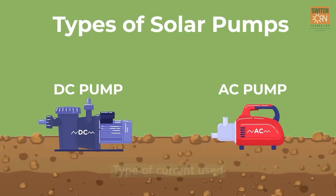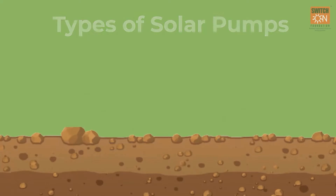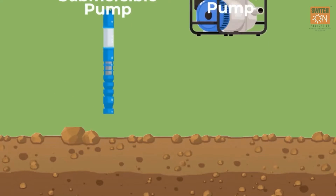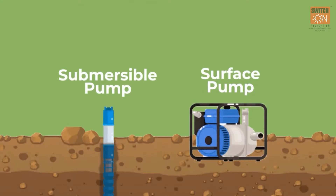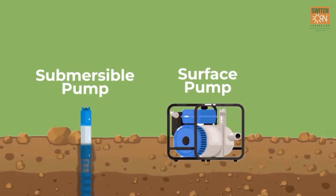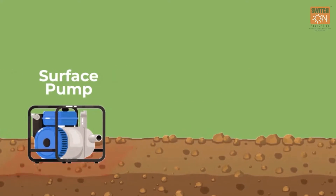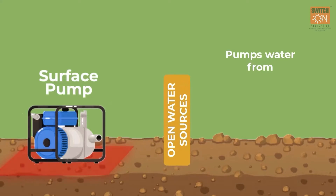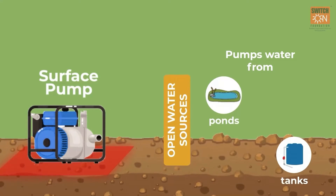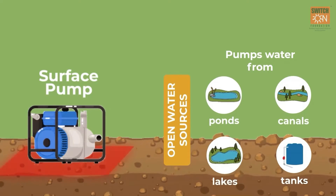Based on the location of the pump with respect to the water source, pumps can be submersible and surface. Surface pumps are located above the ground and pump out water from open water sources like ponds, tanks, canals, and lakes.